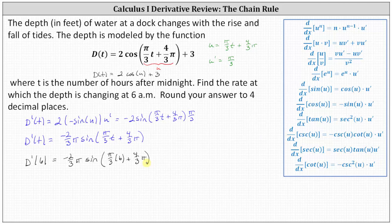Simplifying, six-thirds pi plus four-thirds pi is ten-thirds pi, giving us negative two-thirds pi times sine of ten-thirds pi.